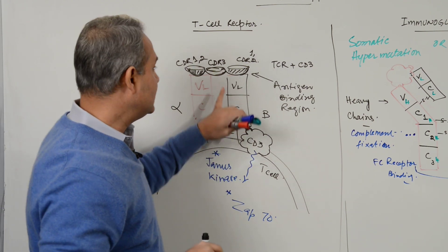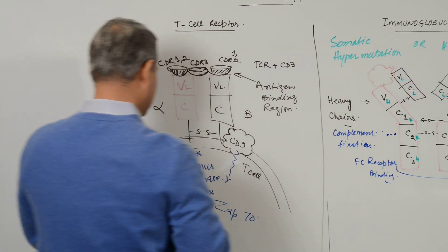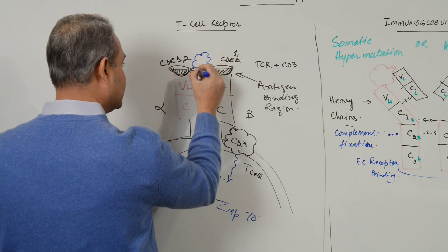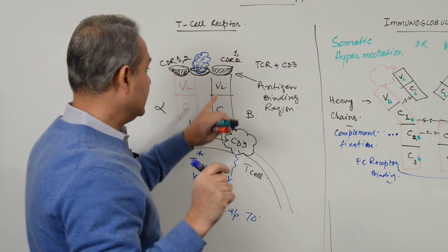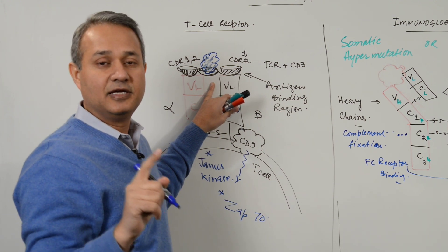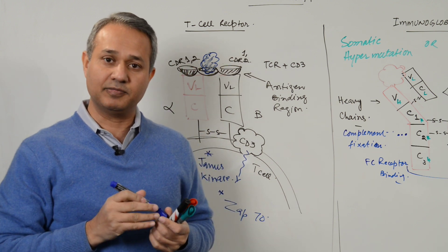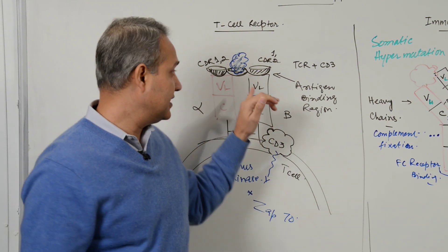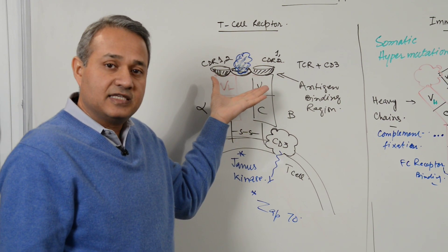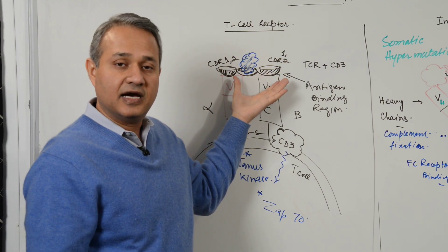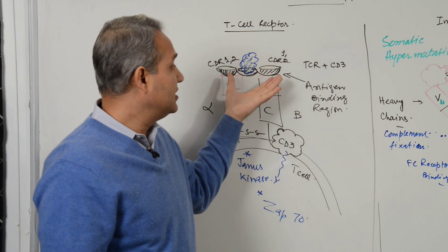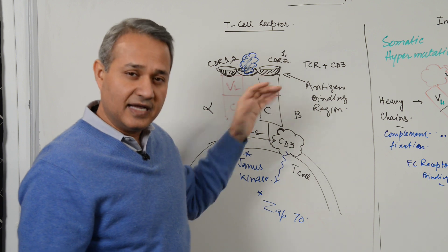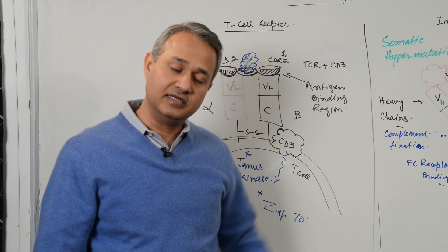CDR3, on the other hand, is the central area which binds to the antigen itself. This area on the T cell receptor antigen binding site has variability, but that variability is not produced by somatic hypermutation — it is generated through DNA rearrangements. The variability in CDR3 comes from DNA rearrangements, not somatic hypermutation.